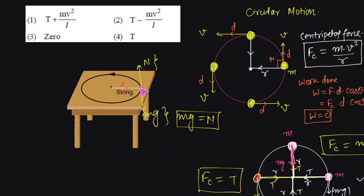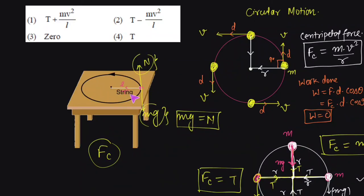The only force that remains is the tension in the string acting towards the center. We know that for any object to move in a circular path, a centripetal force FC is required. Since weight and normal cancel each other, the only force remaining is the tension in the string. This tension provides the required centripetal force. So the centripetal force required for this motion equals the tension in the string. Therefore option 4 is the correct answer.